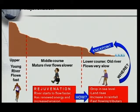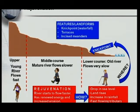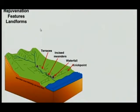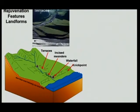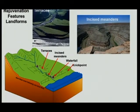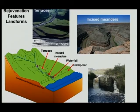The place where rejuvenation takes place is called a nick point. What's very important is you must know the features of rejuvenation: the nick point, terraces, and incised meanders. These are the landforms resulting from rejuvenation — terraces, incised meanders, and the nick point waterfall. Make sure you know how rejuvenation takes place, what rejuvenation is, and the landform features.